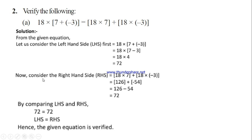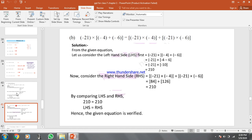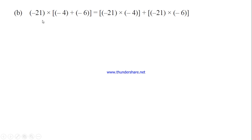By comparing LHS and RHS, both are equal, so the given equation is verified. Next: minus 21 into [(-4) + (-6)] equals (-21) into (-4) plus (-21) into (-6). Children, this is the distributive property — A into (B + C) equals A into B plus A into C. Here minus 21 is distributed to minus 4 and also to minus 6.